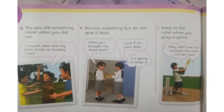Here are three more examples about showing honesty. Say you did something clever when you did not. The boy says: 'I played chess with my uncle Imran on Sunday — I won.' Now guess: is that boy speaking the truth or not? Is his act honest or dishonest?